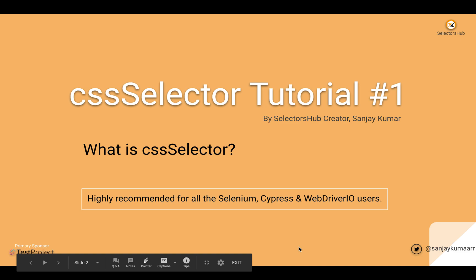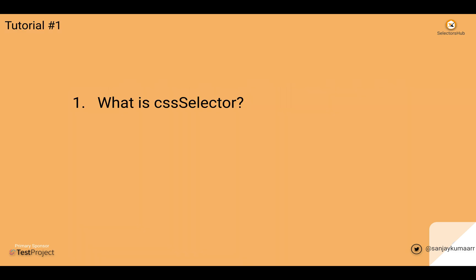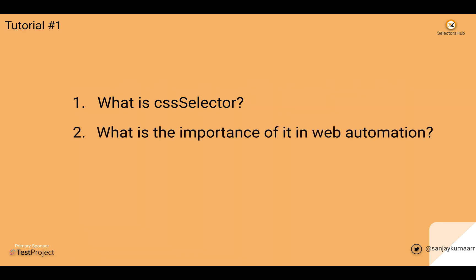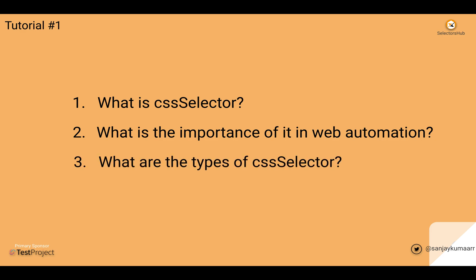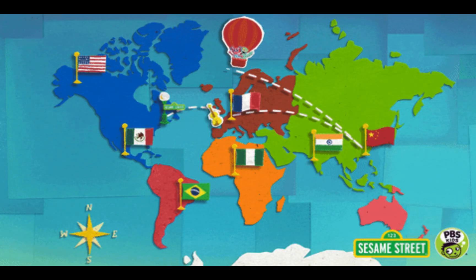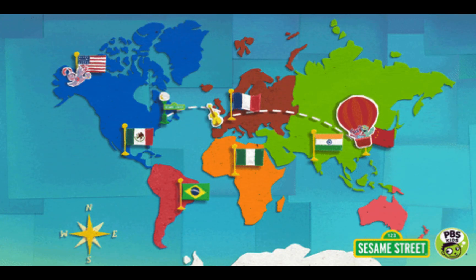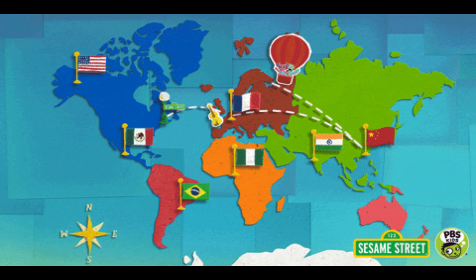Let's get started. In this tutorial we will learn about what is a CSS selector, the importance of this selector in web automation, and the different types of CSS selectors. A CSS selector is an address of a web element on a web page — like any other selector, it is used to locate a web element on a web page.